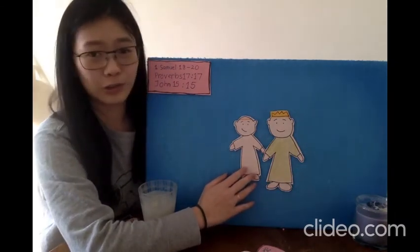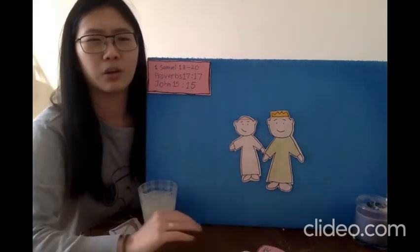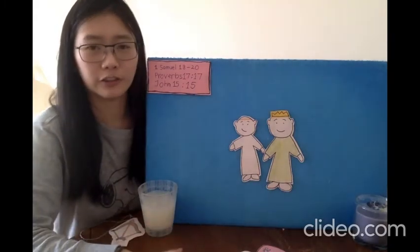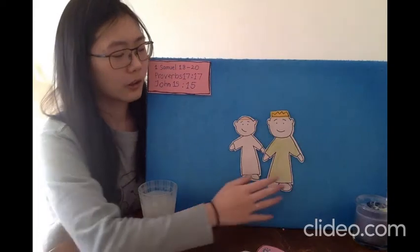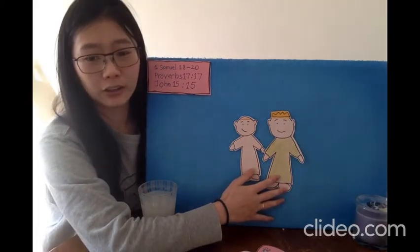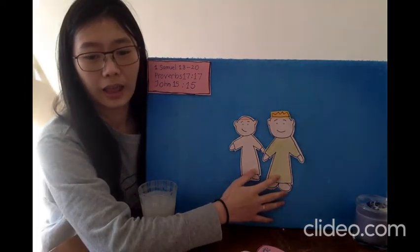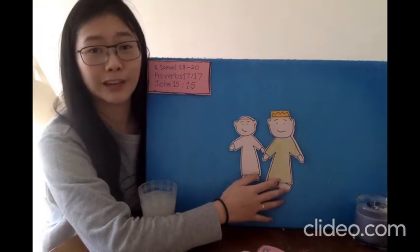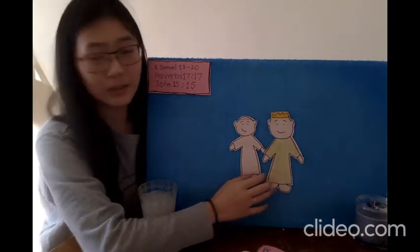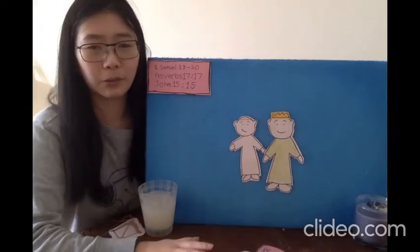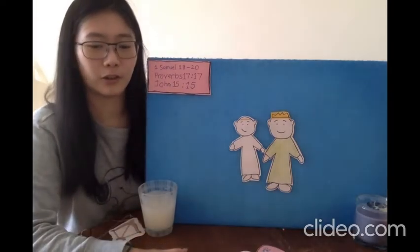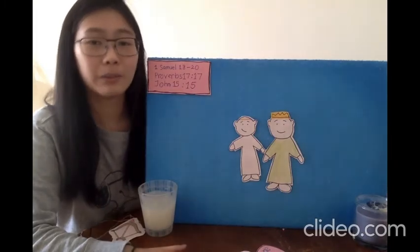Now, David knew King Saul was angry and jealous of him. And because of that, he was scared. But Jonathan was kind to David and wanted to help him and protect him. He promised David and said, David, I will help you get away from this jealous King Saul. And I will always be your friend.